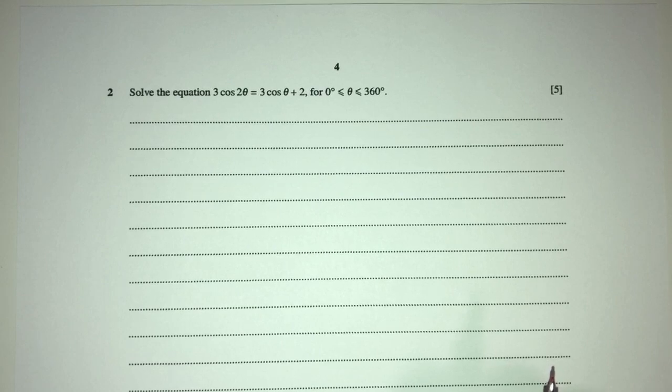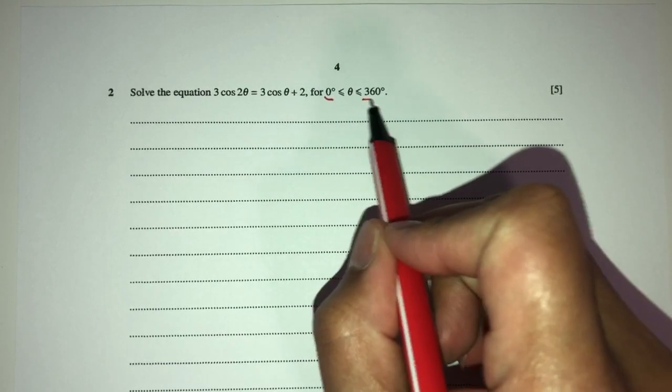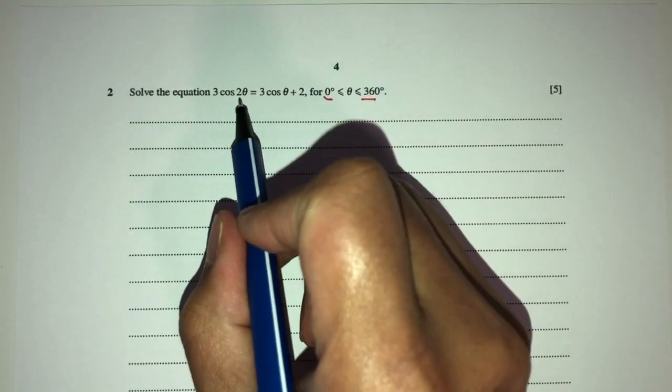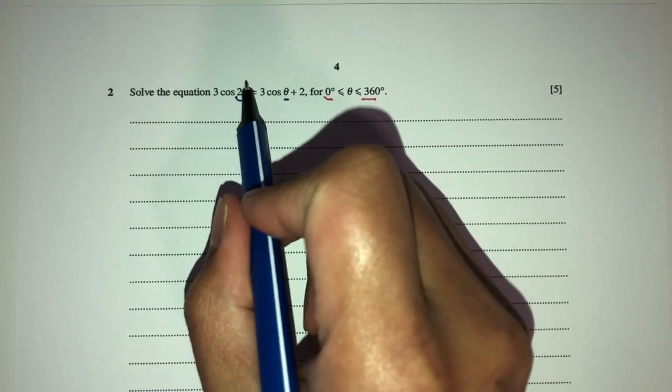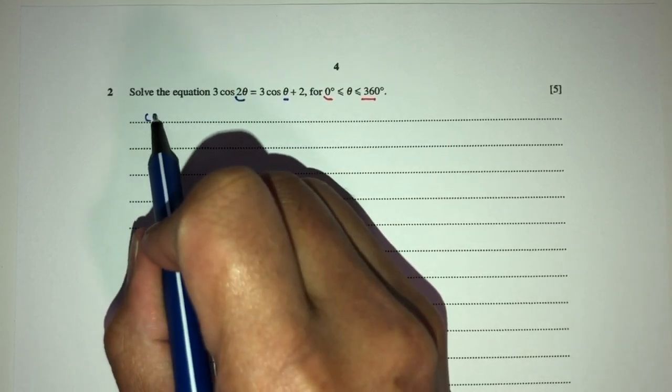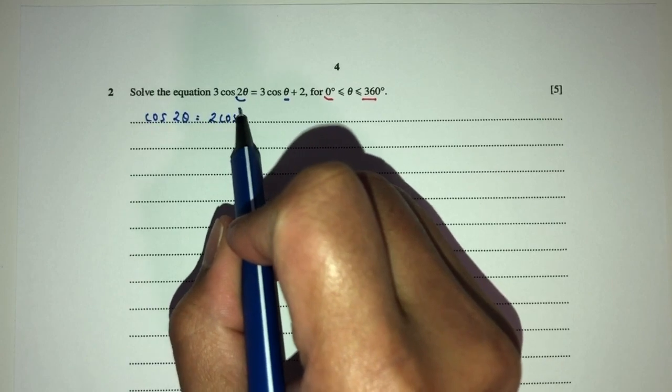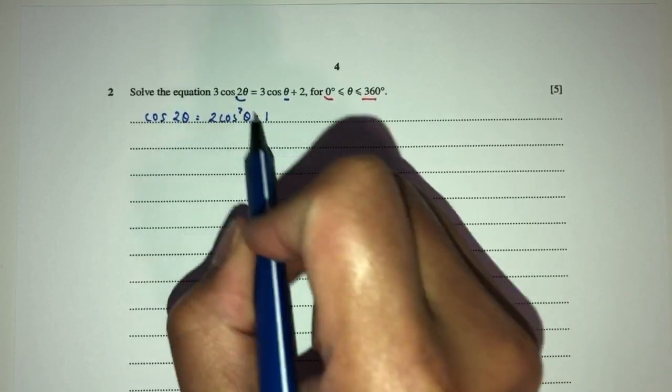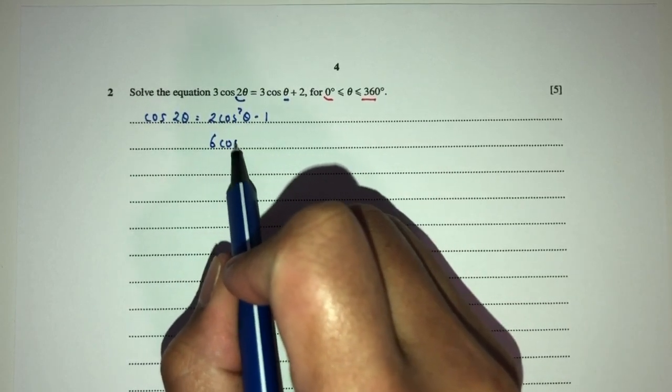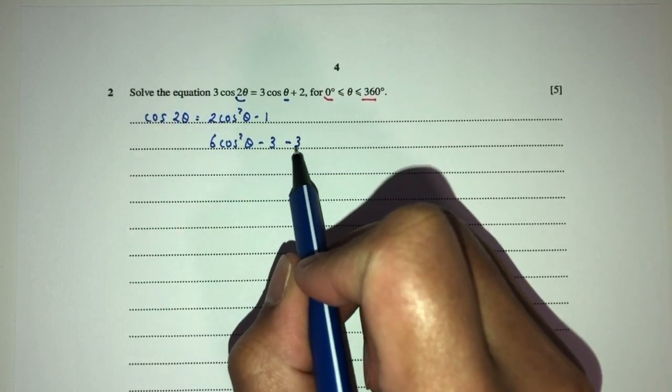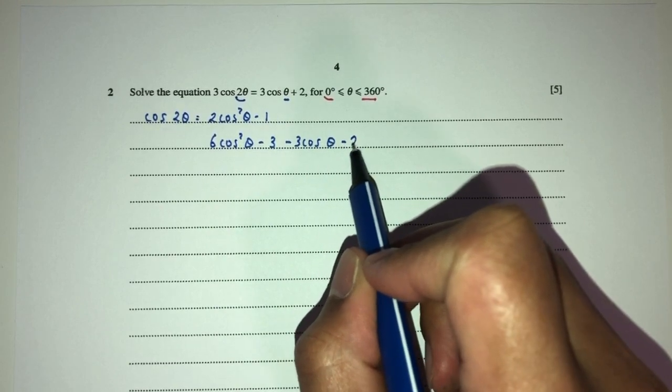Now let's move on to question number 2. Here we have to solve the equation for the value of theta between 0 and 360 for this equation. Now you can see clearly here we have 2 theta and here we have theta, so we have to break this one down. How? We should know cos 2 theta is what? It is 2 cos squared theta minus 1. Now 3 times this will become 6 cos squared theta minus 3, send this over here, become minus 3 cos theta minus 2.